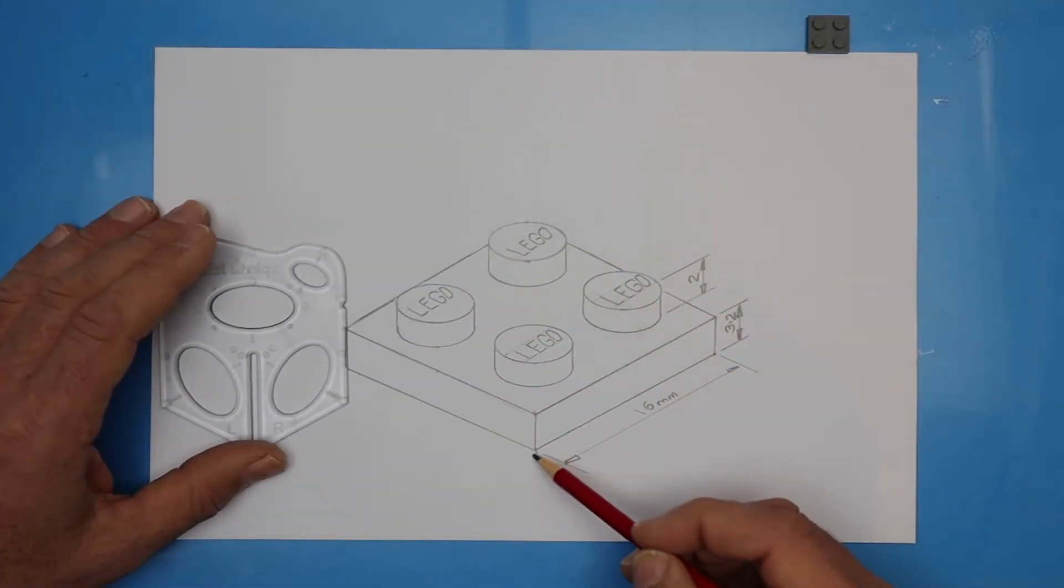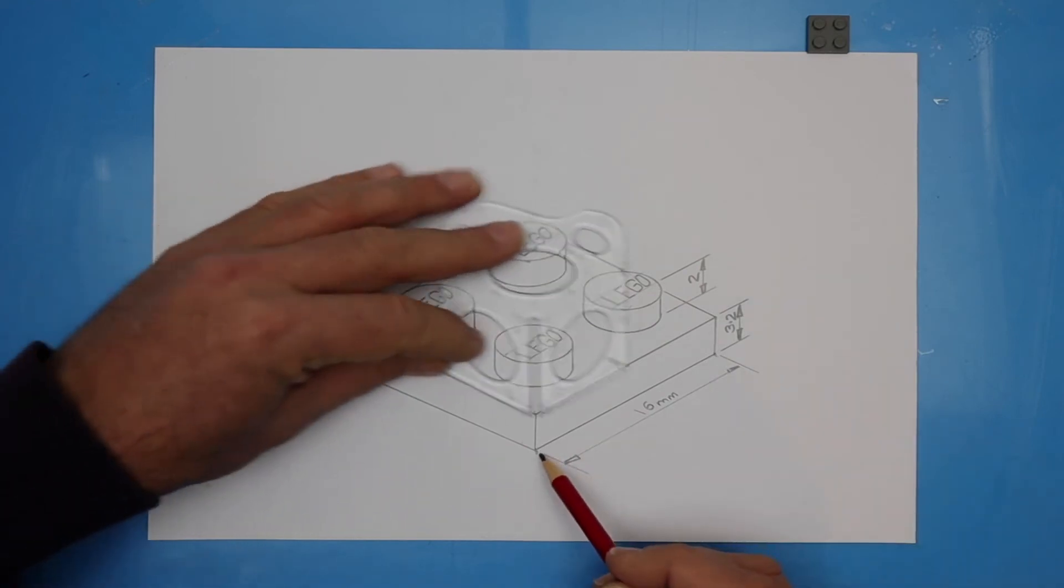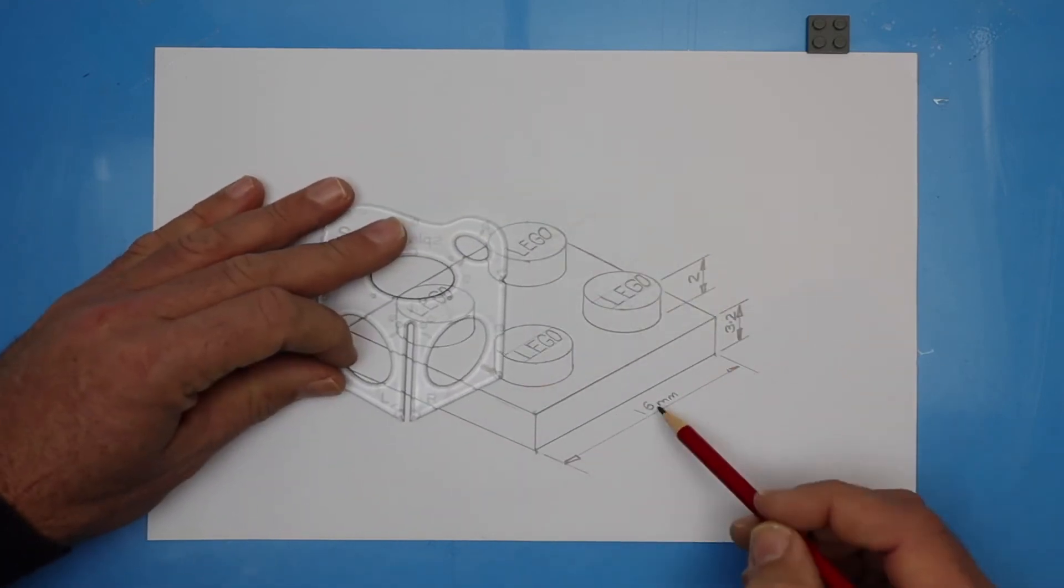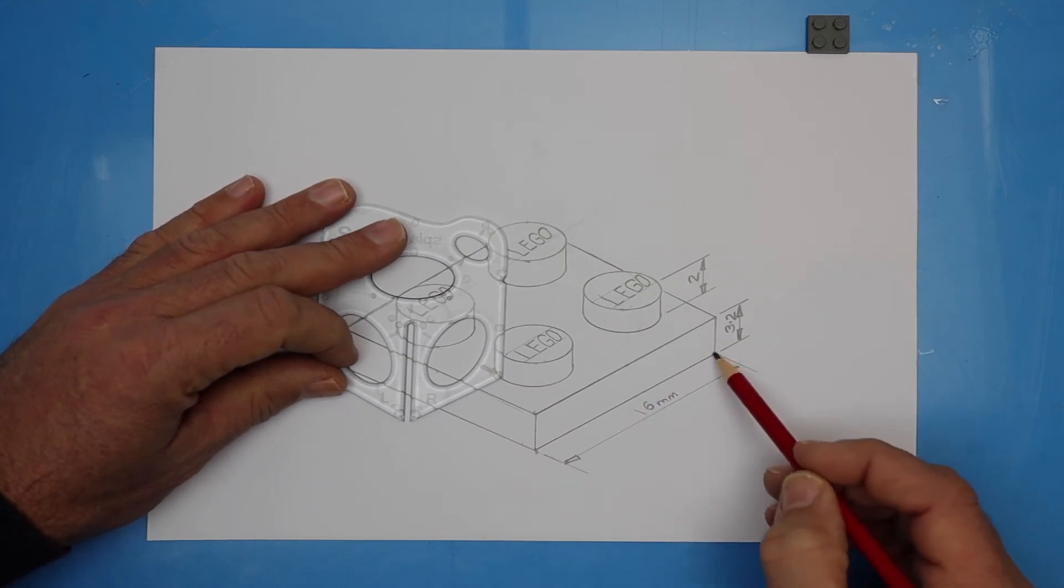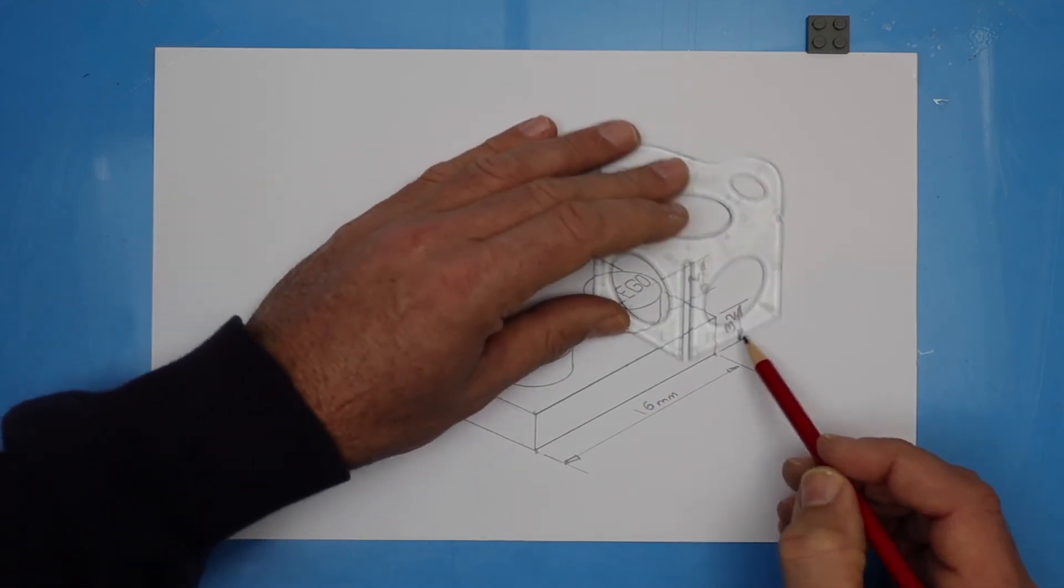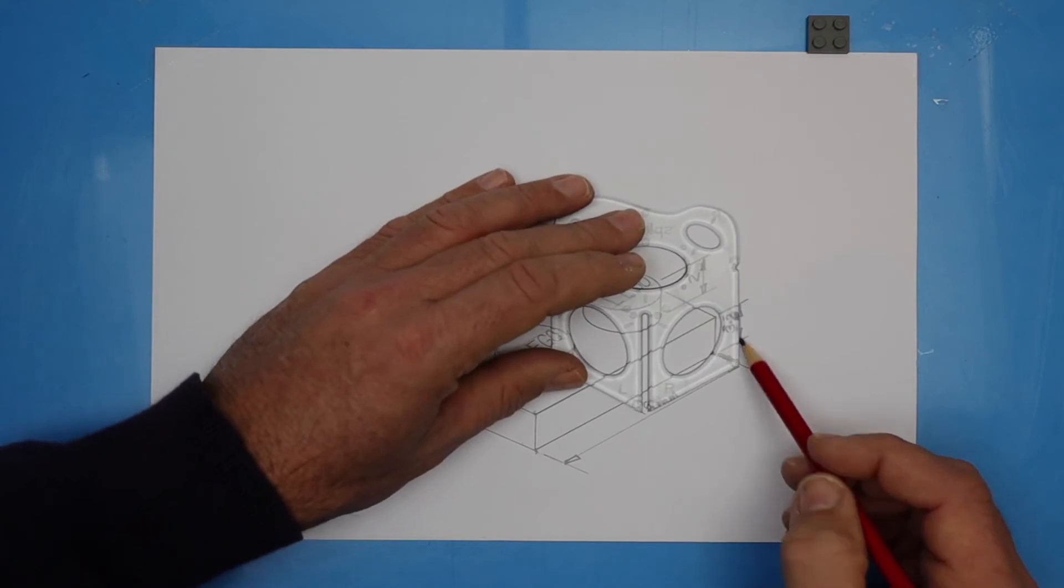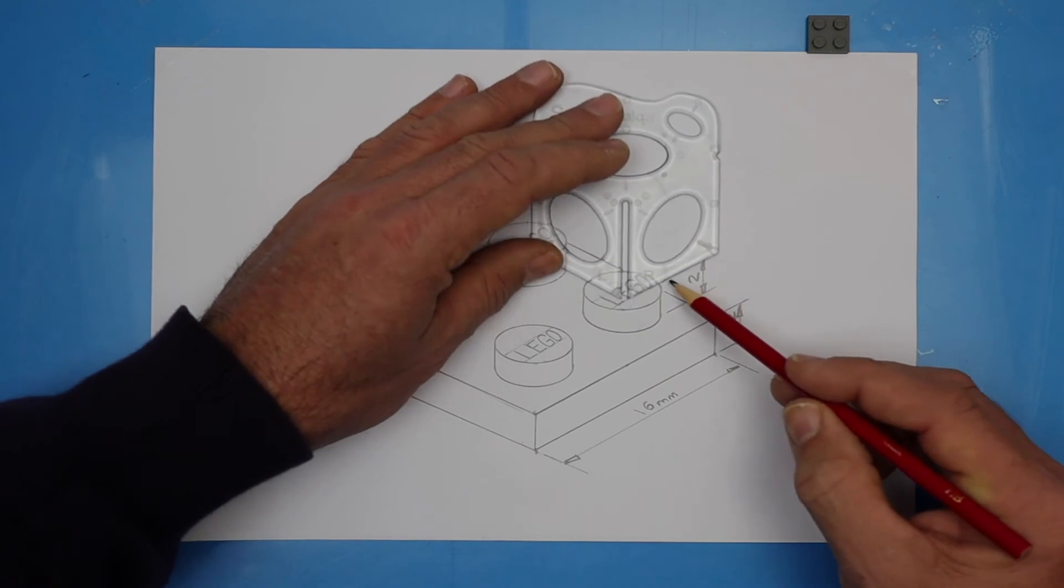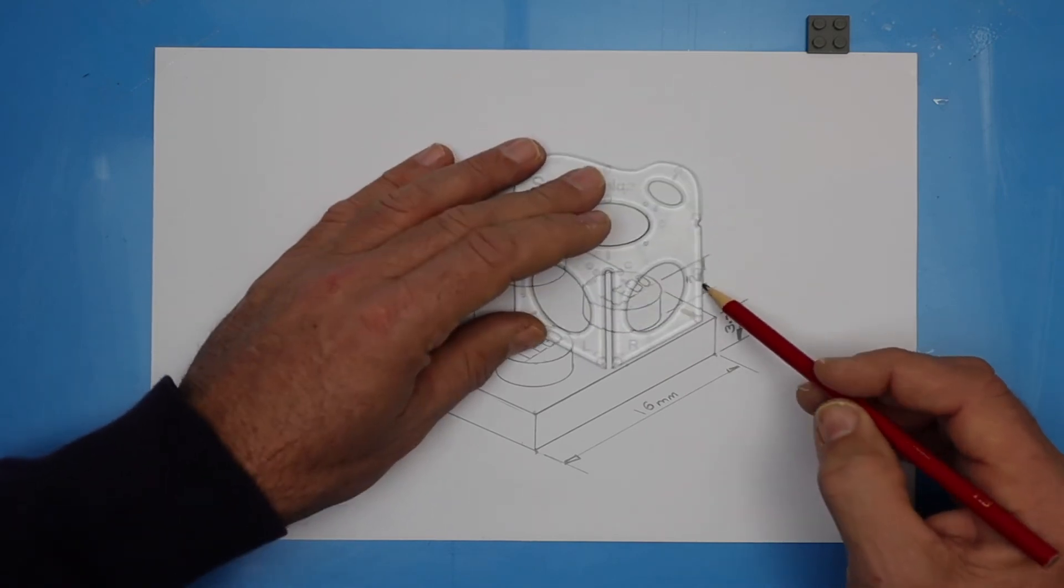To add dimensions to your drawing, here's how it works. First, we use extension lines, and then a dimension line, and then we place our lettering on top. This is 3.2 millimeters high, and the height of the stud is 2 millimeters.